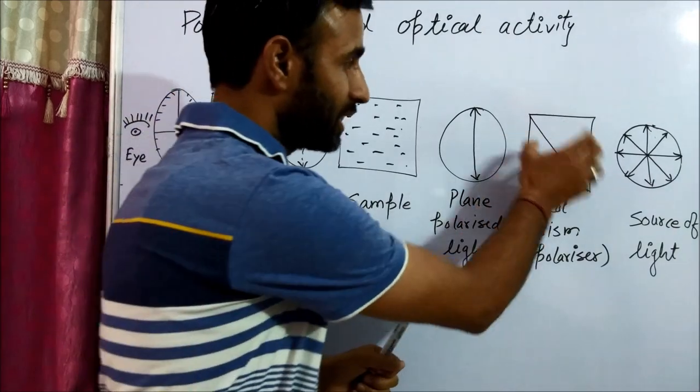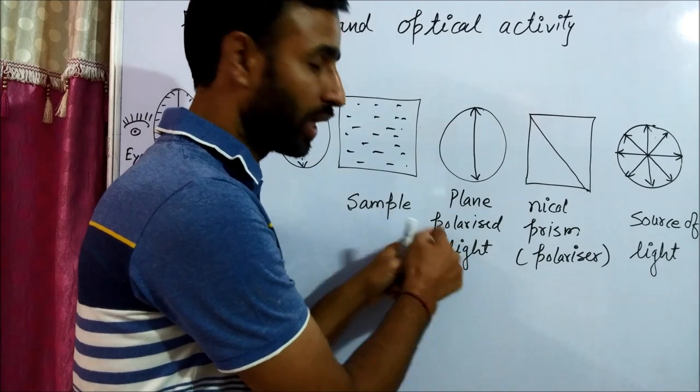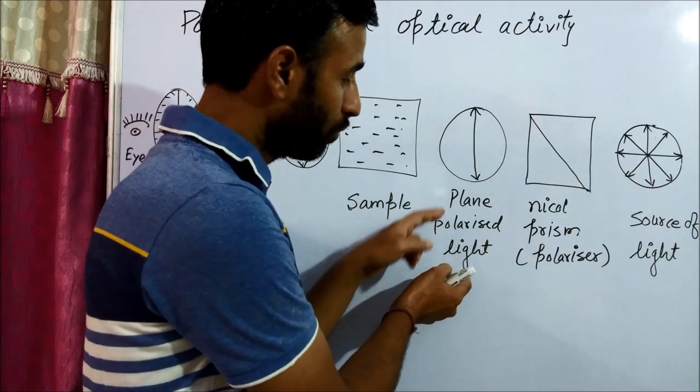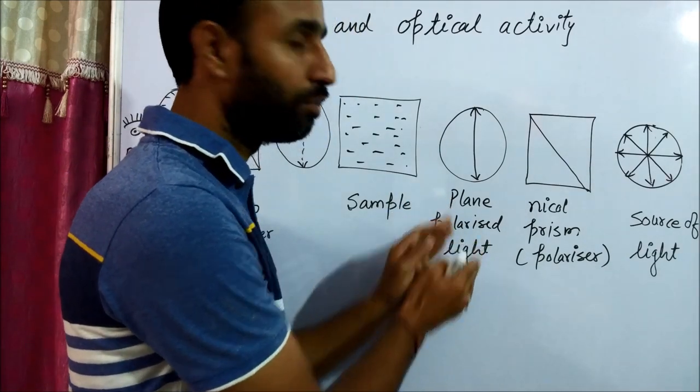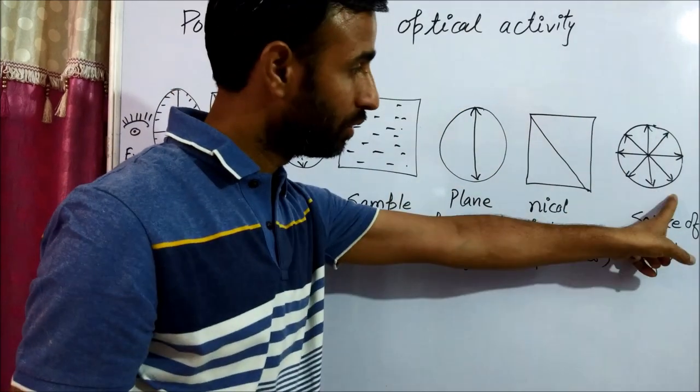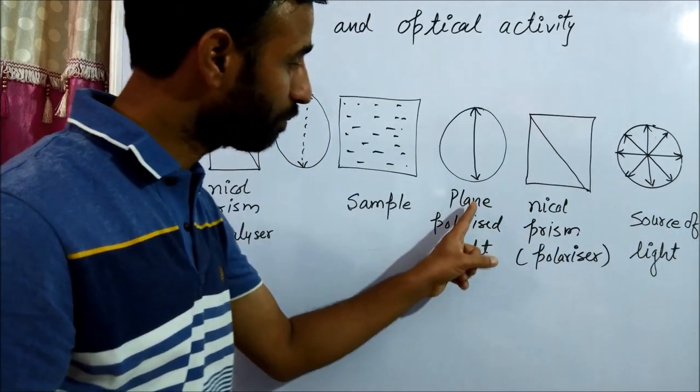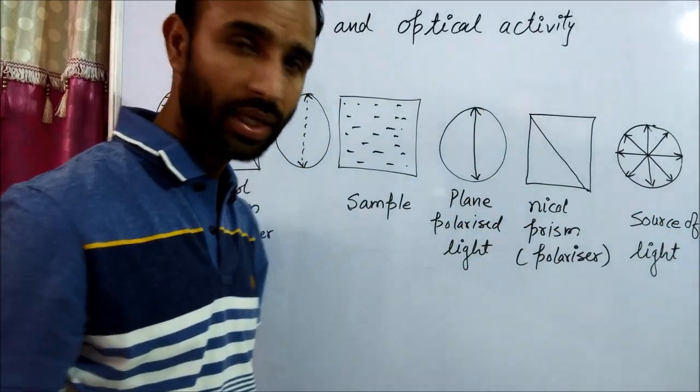That means this nickel prism makes the light plane polarized. What is plane polarized light? The light which oscillates only in one plane. Normal light oscillates in all planes. Plane polarized light oscillates only in one plane.